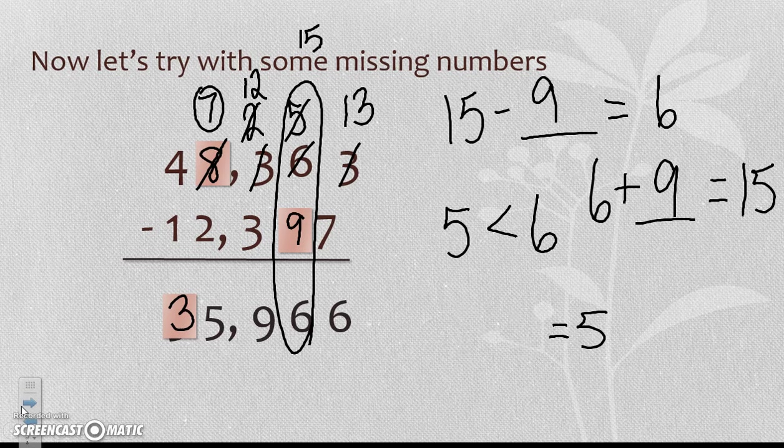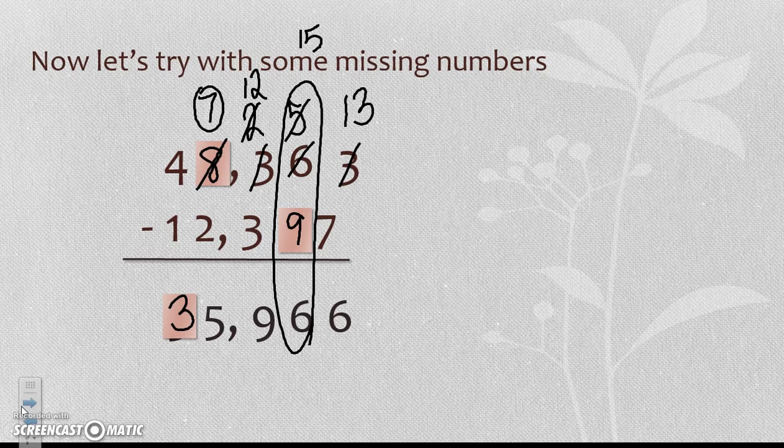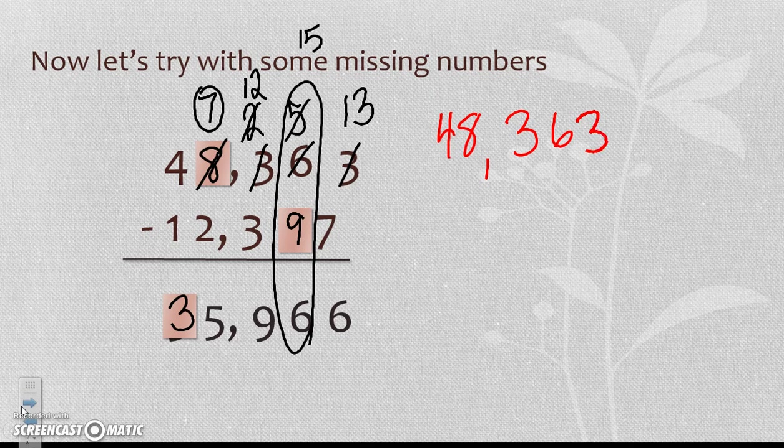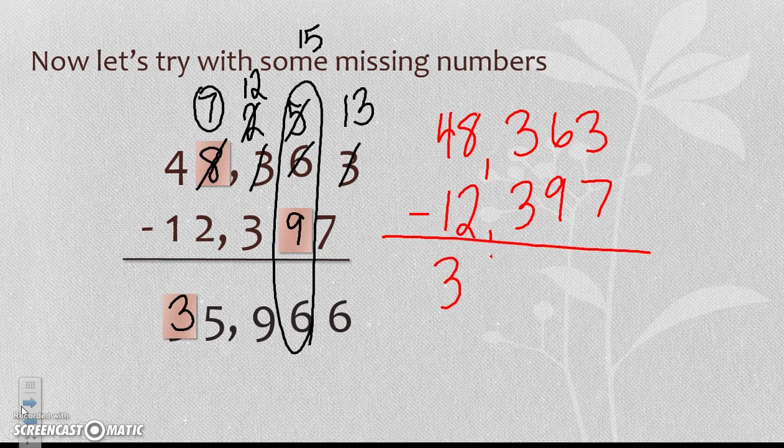So let's rewrite our problem so that when I remove the boxes we can check to make sure we're correct. So we had 48,363 minus 12,397, and our final answer would have been 35,966.